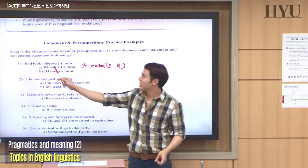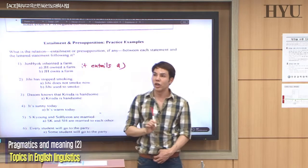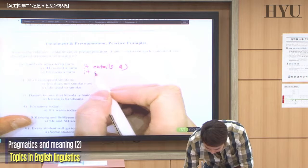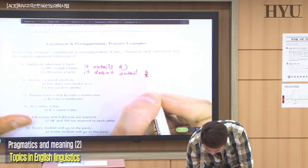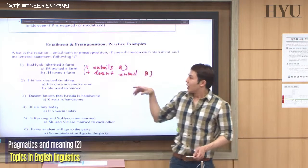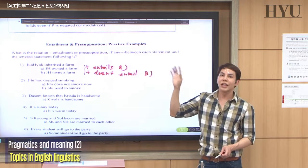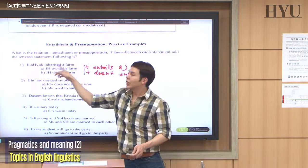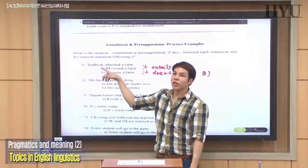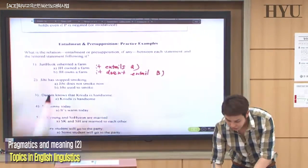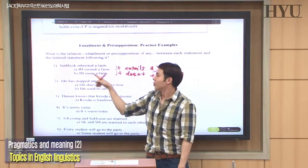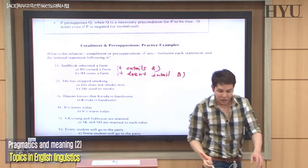Does it entail that he still owns the farm? No — he may have sold it or given it to someone else. So it doesn't entail B. For presupposition: if you make the original into a question — 'Did Joon Hyuk inherit a farm?' — or negate it — 'He didn't inherit a farm' — then A and B no longer hold. So no presupposition. When you modalize it — 'Joon Hyuk might have inherited a farm' — it doesn't mean he owns or owned a farm. So no presupposition either.